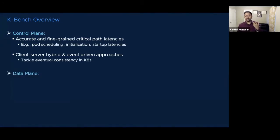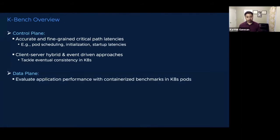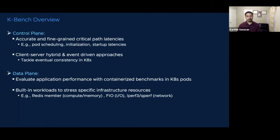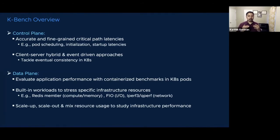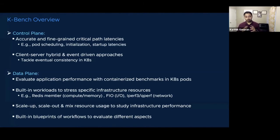For the data plane, one can evaluate application performance using real containerized benchmarks in Kubernetes pods. While one can use their own workloads, they can also leverage built-in workloads provided by KBench to stress specific infrastructure resources. For instance, you can use Redis MemTier that comes pre-built in KBench to stress the compute and memory aspects, or say the FIO benchmark to stress the IO aspects. Using these artifacts, one can scale up or scale out resource usage to study infrastructure performance — scale up meaning use a single pod to increasingly stress a particular resource category, or scale out meaning add more pods to the system to consume resources in a particular category. KBench also includes built-in blueprints of workloads that take advantage of these benchmarks to evaluate different aspects of data plane performance, such as what pod density a particular platform can achieve.